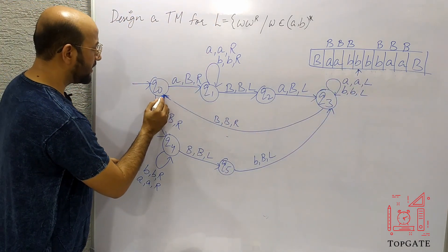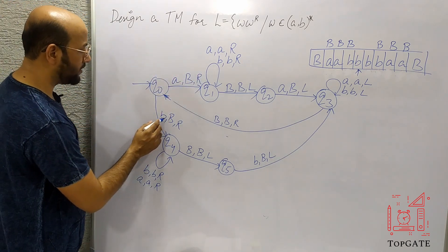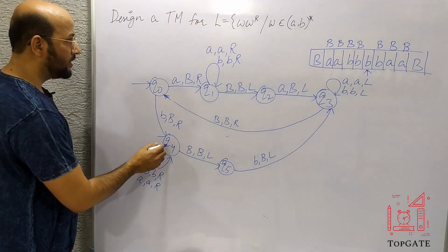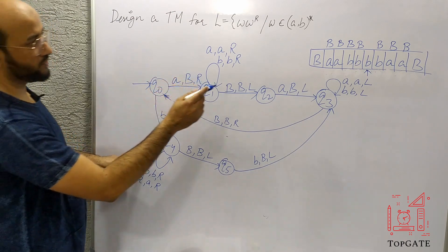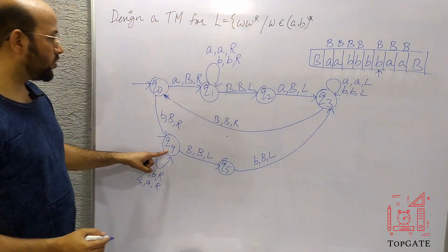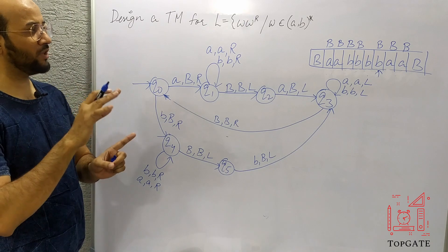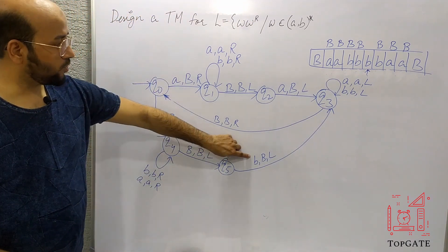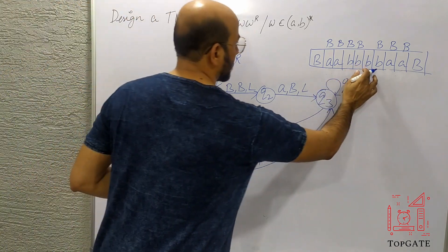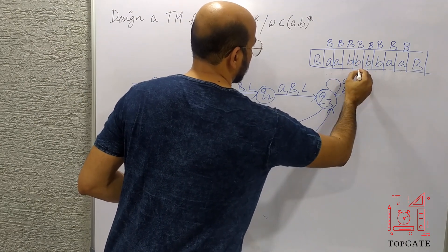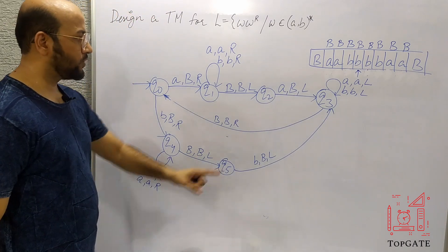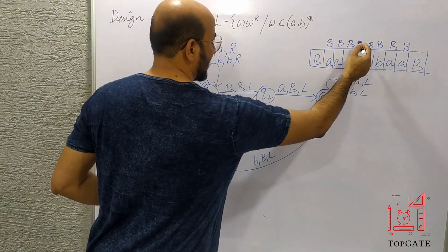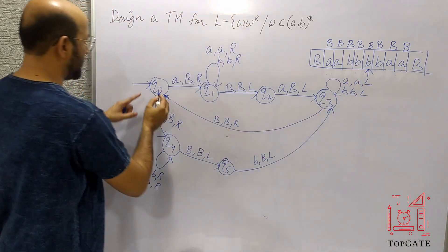At Q0, finding B, we change it to capital-B and move right to Q4. At Q4, we skip this small B and the pointer reaches the rightmost blank. At Q4, finding this last B, we keep it as B and move left. At Q5, finding small B, we change it to capital-B and move left. At Q3, finding B, we keep it as B and move right to Q0.